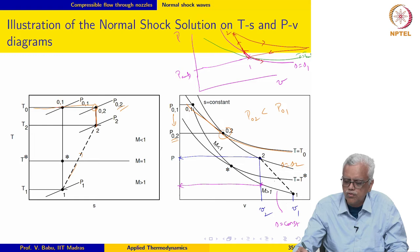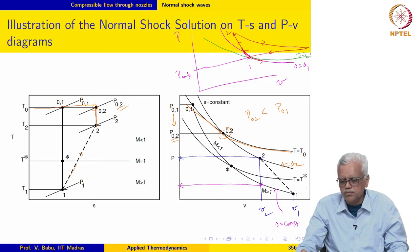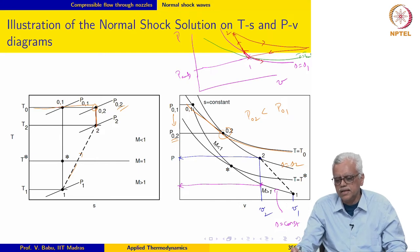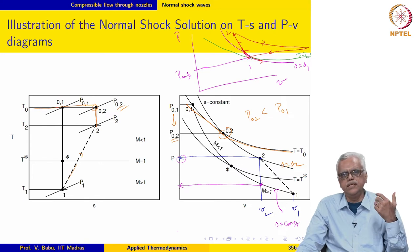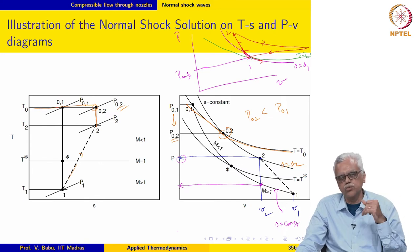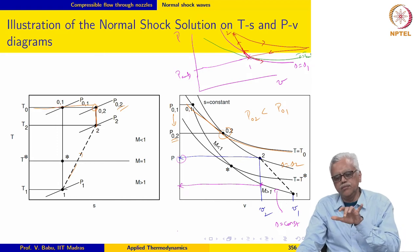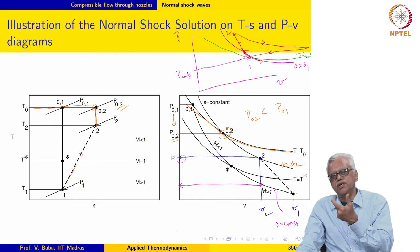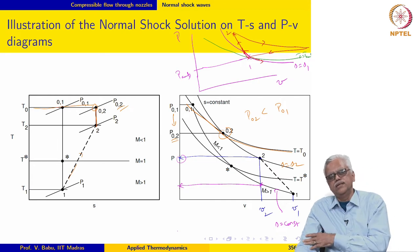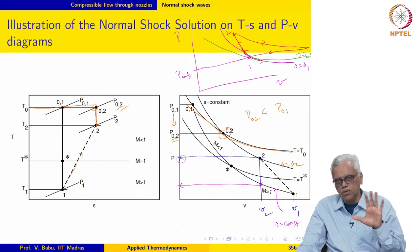An isentropic compression process follows the S-equal-constant line, and for given V1 and V2, the pressure reached is lower, whereas the pressure reached with the normal shock process is much higher. In a practical application like the diffuser of an engine in a supersonic aircraft, the specific volume corresponds to the size or length of the diffuser. This means that for a given length of the diffuser, normal shock compression can accomplish a higher exit pressure compared to isentropic compression, although there is a loss of stagnation pressure.